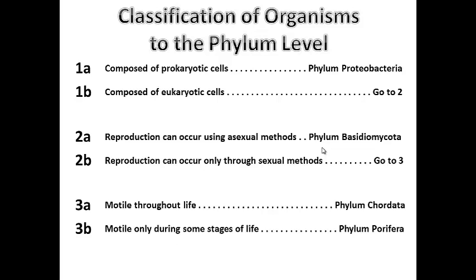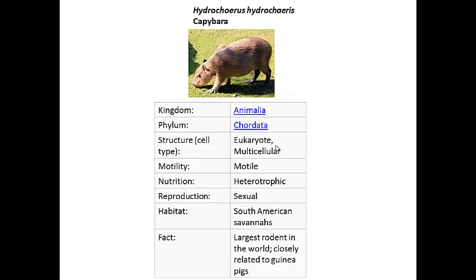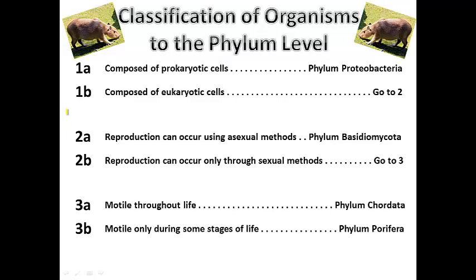Just to be on the safe side, I will test my dichotomous key using one of the organisms I researched. I will choose my favorite mammal, the capybara. I start at statement number 1 and read both 1A and 1B. I know that capybaras are in domain eukarya and therefore they are composed of eukaryotic cells, so I choose statement 1B.